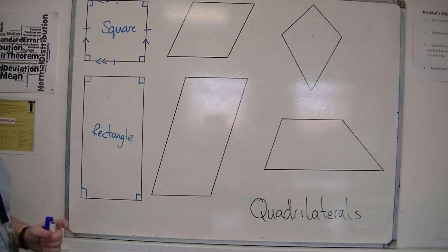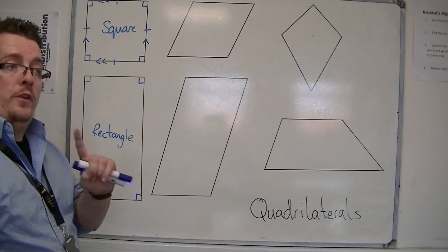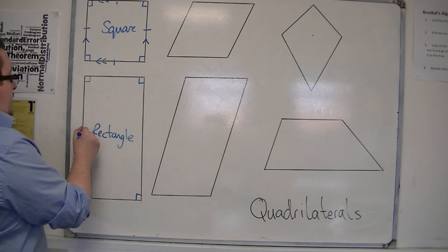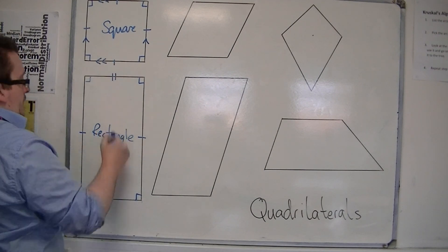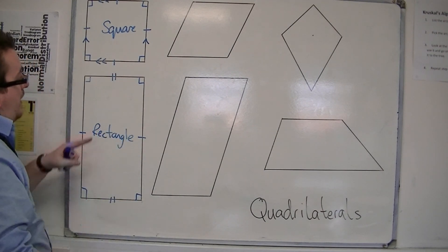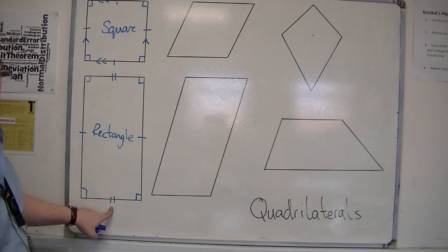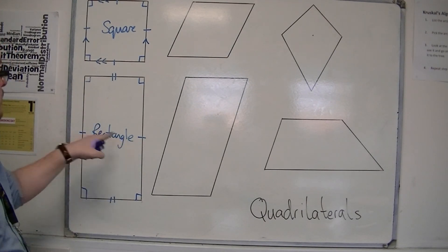It also has two pairs of same sides. So this side is the same length as this one, and these are the same sides. So I'm using this as a way to represent that these two sides are the same length, while these two are the same length as well.